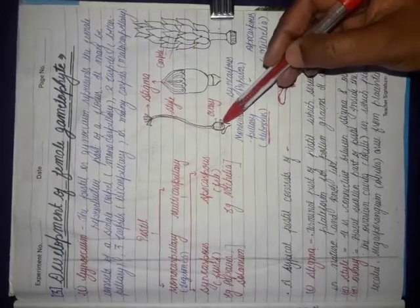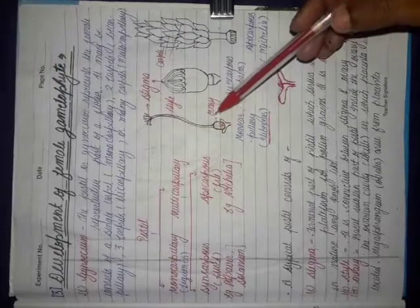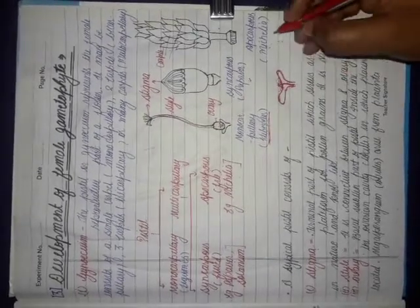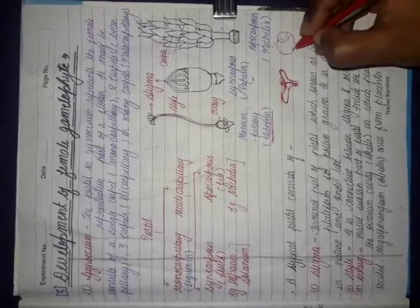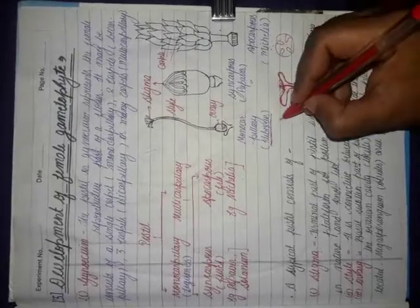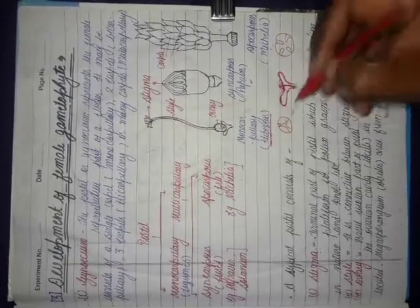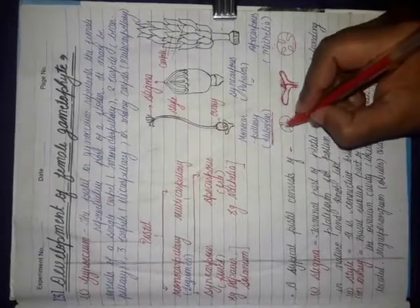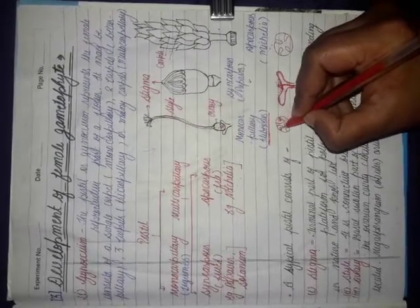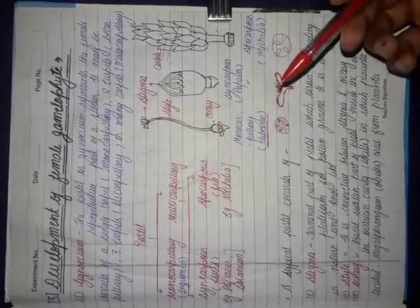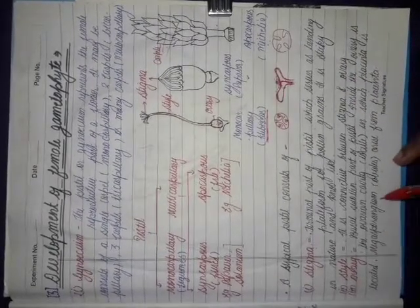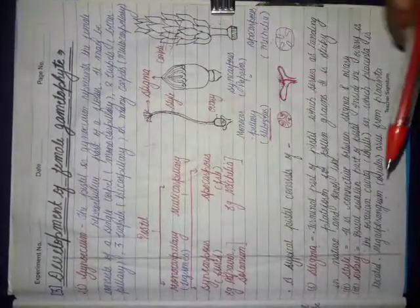The basal portion of the pistil is the ovary. It is the swollen portion of the pistil. Inside the ovary there are ovarian cavities, also known as locules, which can number 3 or 4. The placenta is located inside the locule, and the ovules arise from the placenta.